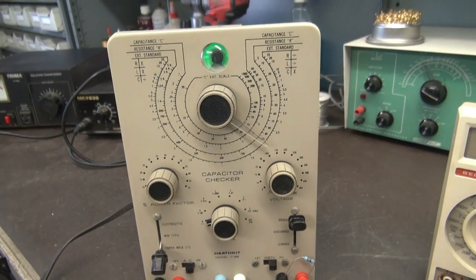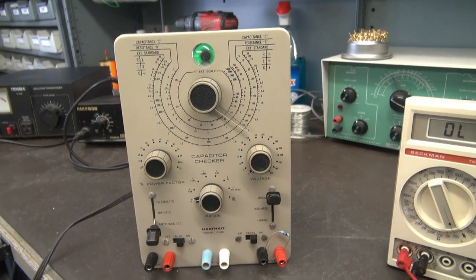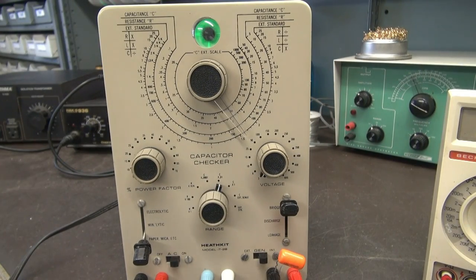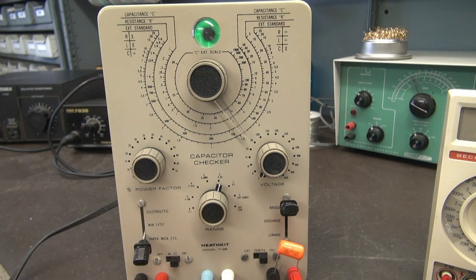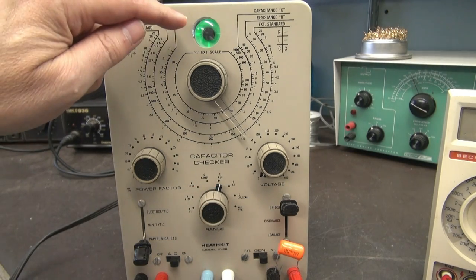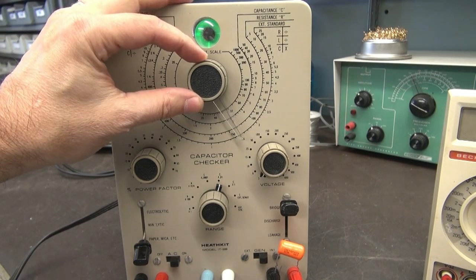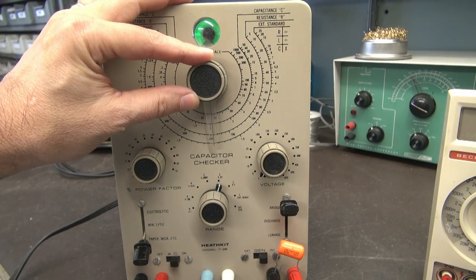Let's do some capacitance with it. What I have here is a Sprague orange drop 0.022 microfarad cap. I'm on C at 0.01. You see the bridge is closed right now. As we approach, you should see it open. There it is, boom boom, perfectly. Nice and smooth.